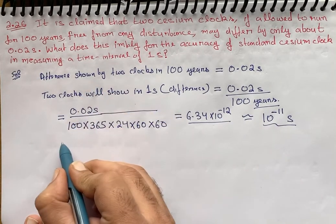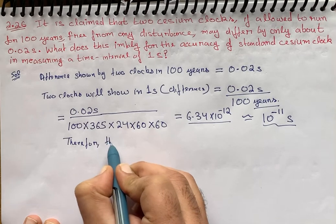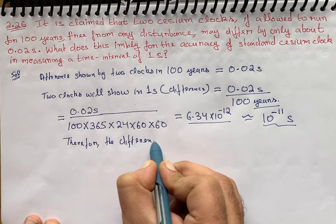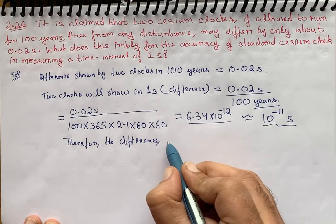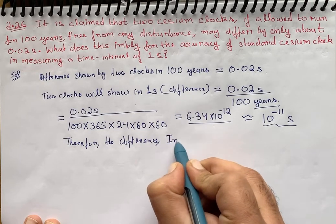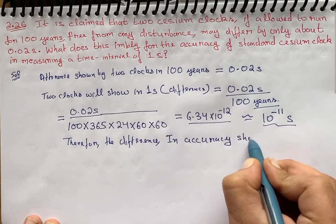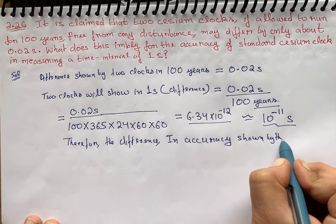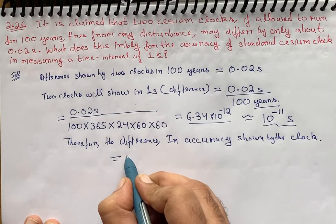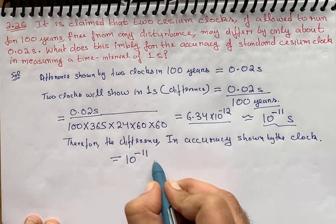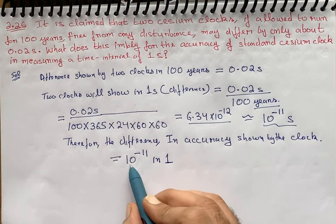Therefore, the difference in accuracy shown by the clock is 10 raised to power minus 11 in one second.